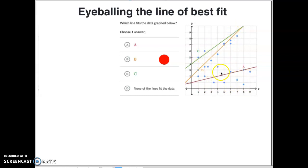These dots here don't line up with C or line up with B, and these dots up here don't line up with line A. Really, there's no good line of best fit here. So, we would put our answer down here as letter D. None of the lines fit the data.